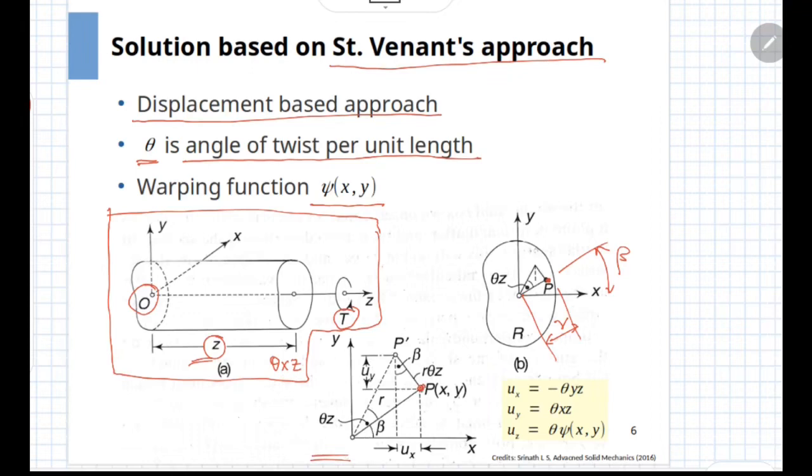This particular point P under the action of torque moves to point P' and the displacement of this point under the action of torque is given as r multiplied by angle through which it rotates. This angle is theta z. So the total displacement from P to P' is given by r theta multiplied by z.